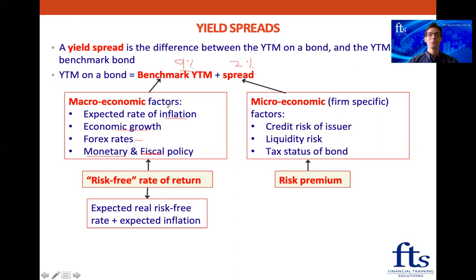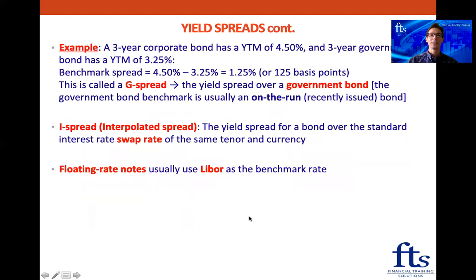That was just for a little bit of interest. So let's do a little example and see how easy this is. We've got a three-year corporate bond with a yield to maturity of 4.5%, and the three-year government bond yield to maturity is 3.25%. So the spread of the corporate bond over the government bond is going to be 1.25%, or 125 basis points — because 1% is 100 basis points. We call this a G spread. The government bond benchmark is usually what we call an on-the-run bond, which is a recently issued bond — that's the best one to compare the corporate bond yield to.